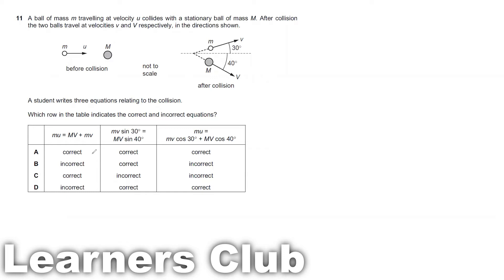Looking at the first equation: Mu is the momentum before the collision. The stationary ball has no momentum, and the moving ball has momentum mass times velocity U, so this is correct — this is the momentum before collision. But after the collision, velocity V is not moving horizontally, so you cannot simply write MV plus MV because there is an angle involved. So this is incorrect, meaning the answer is either B or D.